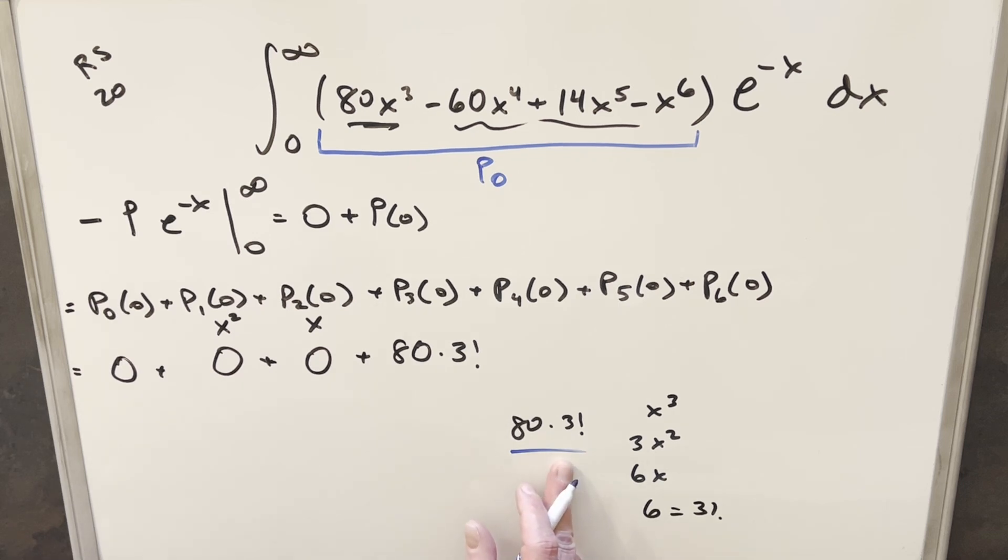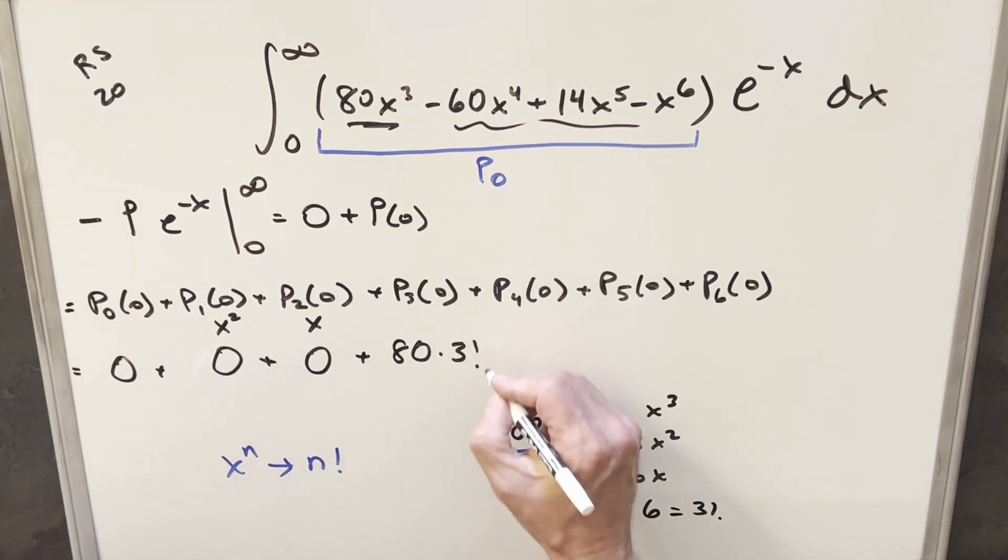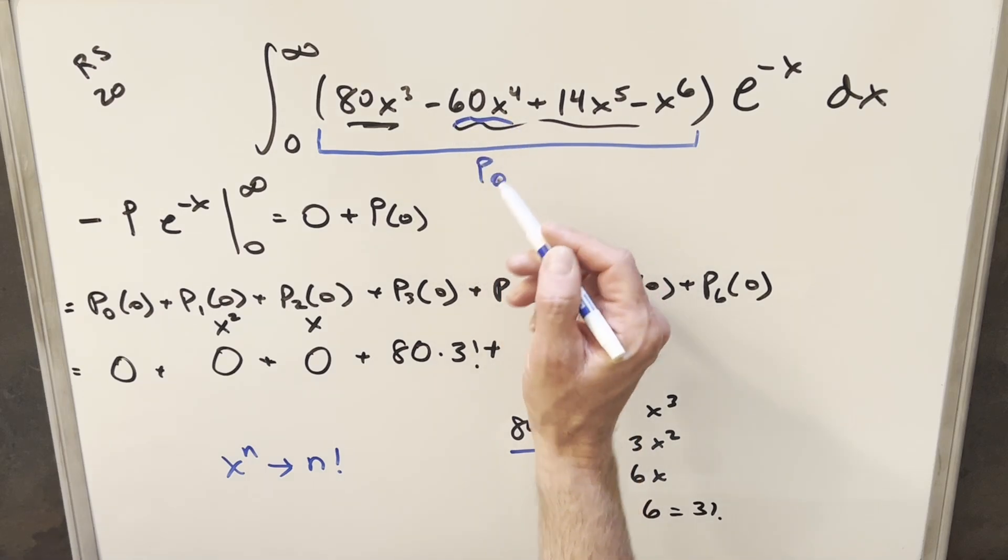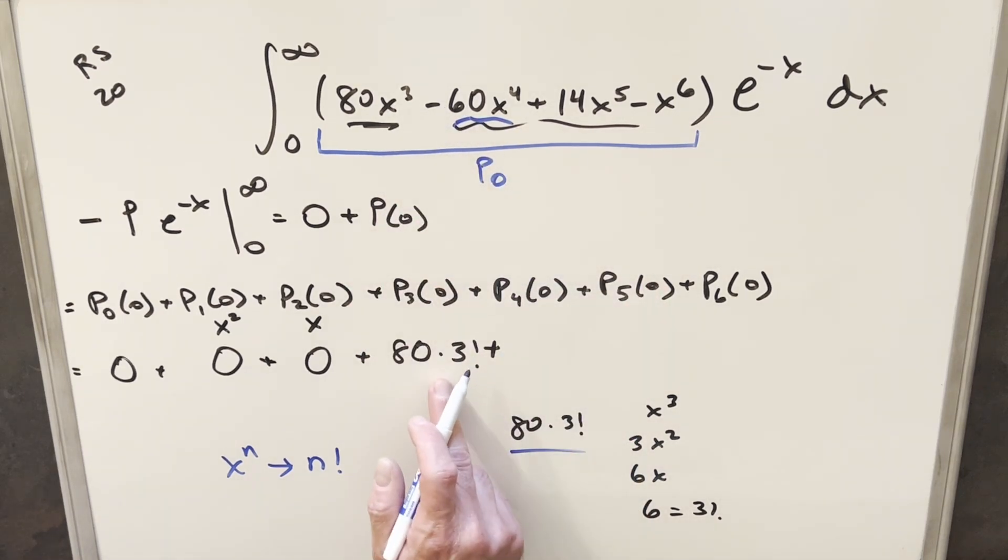And it turns out we can just use this same simplification in every case because ignoring the coefficient, when you just have something like x^n and you differentiate it a bunch of times, eventually you're going to differentiate this down to n factorial, assuming of course that n is going to be a positive integer. So then coming over to our fourth derivative, what's going to happen is we can really just focus on this 60x⁴ term.